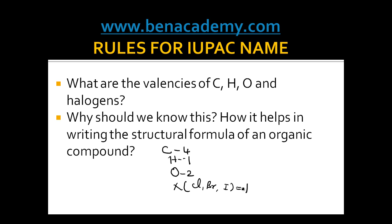Why should we know the valency? How does it help in writing the structural formula of an organic compound? Let us take the compound CH3COOH. We may not know what it is right now, but to explain the use of knowing valency, I've taken this example. This is an acid because it has the –COOH group as a functional group. Why is there a single bond here, and not a double or triple bond? All these bonds are determined by valency.